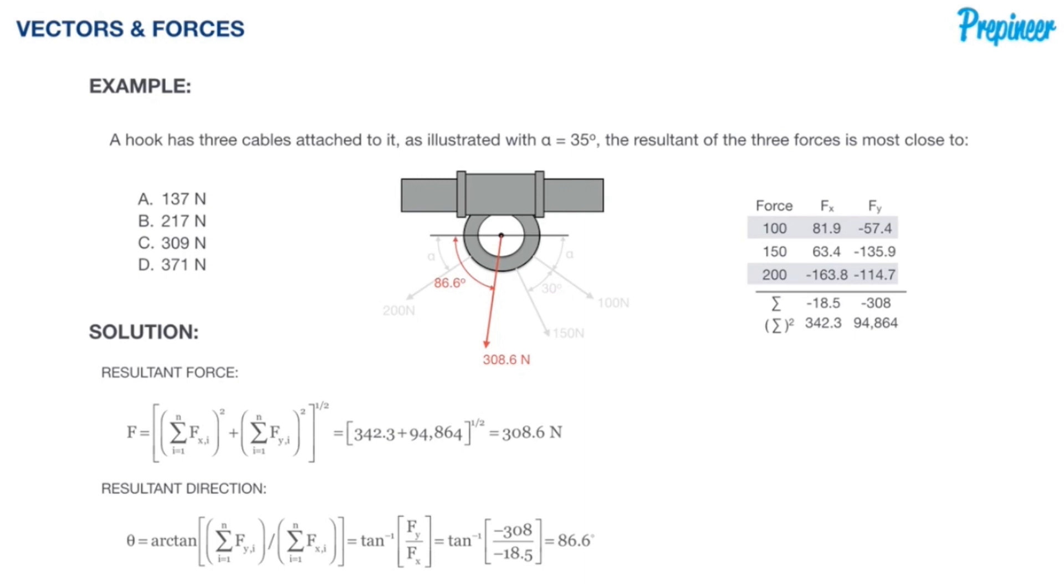That's going to put us in the third quadrant because both the f_x and the f_y component are negative. So when in that sense, knowing what we know about opposite or tangent opposite over adjacent.